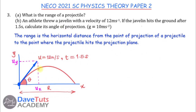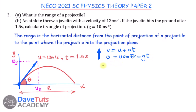An athlete throws a javelin with an initial velocity of 12 m/s, and it hits the ground 1.5 seconds later. Considering the upward movement, at maximum height V = 0, and using V = U + at: 0 = U sin θ − gT₁, giving time to maximum height T₁ = U sin θ / g. Since it's a two-way journey, the total time of flight T = 2U sin θ / g.